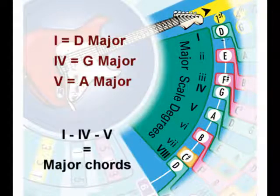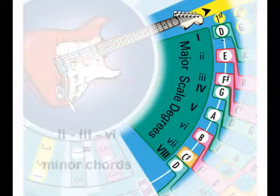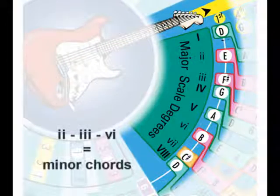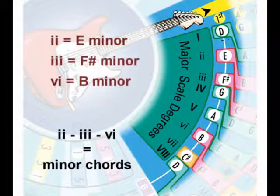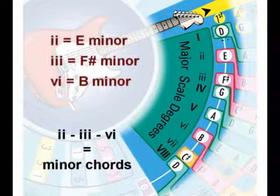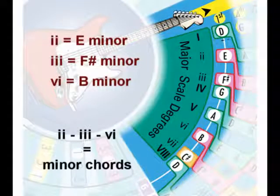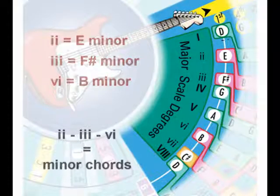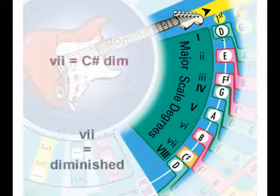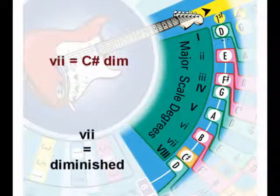One is a D major, four is a G major, five is an A major chord. By looking at the lowercase numbers — two, three, and six — this tells us our minor chords. Two is an E minor, three is an F sharp minor, six is a B minor, and seven is our diminished.